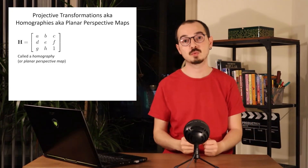Possible interpolation filters — also seen in programs like Photoshop — include nearest neighbor, which just picks the closest pixel; bilinear, which takes a weighted average of nearby neighbors based on distance; and bicubic or sinc, which are more complex interpolation approaches.